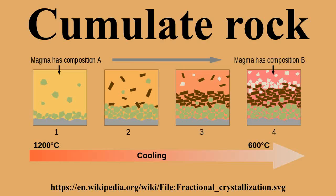Oxide mineral cumulates form in layered intrusions when fractional crystallization has progressed enough to allow the crystallization of oxide minerals, which are invariably a form of spinel. This can happen due to fractional enrichment of the melt in iron, titanium or chromium. These conditions are created by the high-temperature fractionation of highly magnesian olivine or pyroxene, which causes a relative iron enrichment in the residual melt. When the iron content of the melt is sufficiently high, magnetite or ilmenite crystallize and, due to their high density, form cumulate rocks. Chromite is generally formed during pyroxene fractionation at low pressures, where chromium is rejected from the pyroxene crystals. These oxide layers form laterally continuous deposits of rocks containing in excess of 50% oxide minerals.